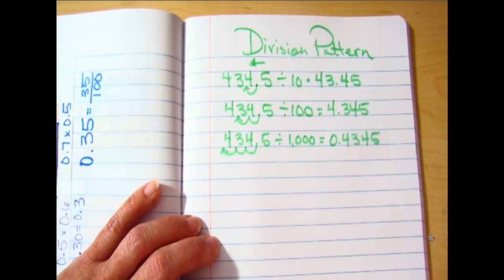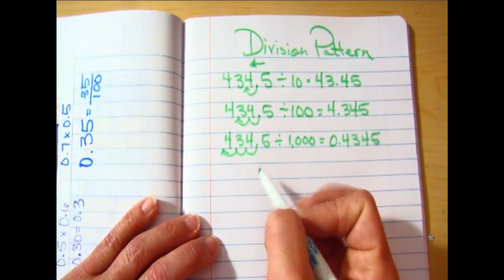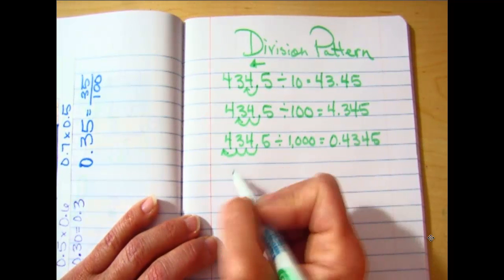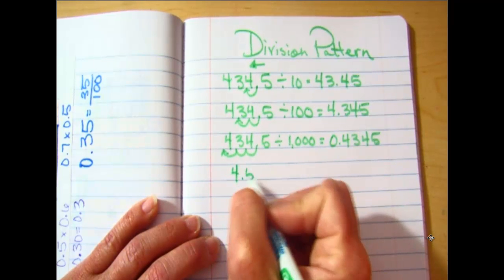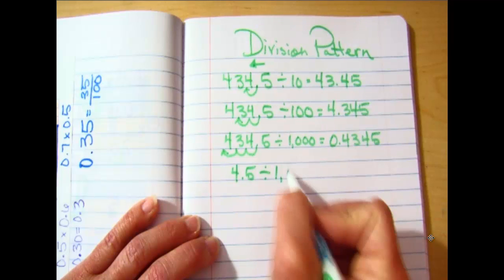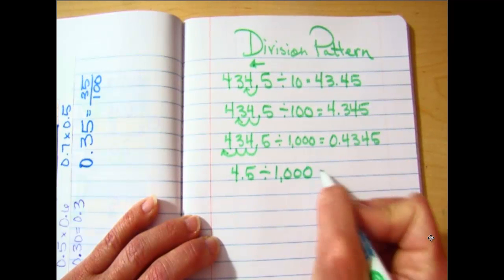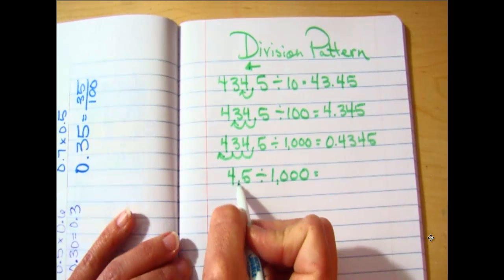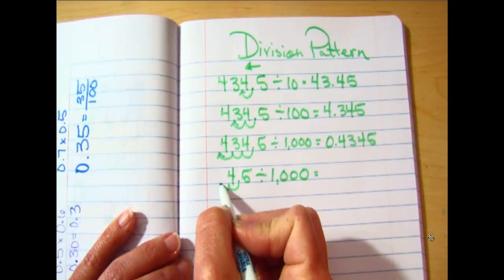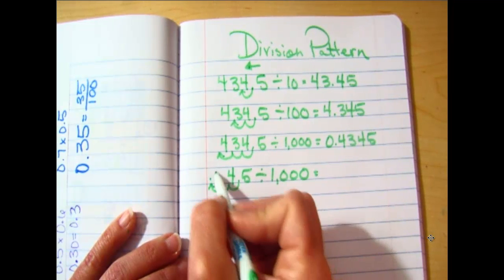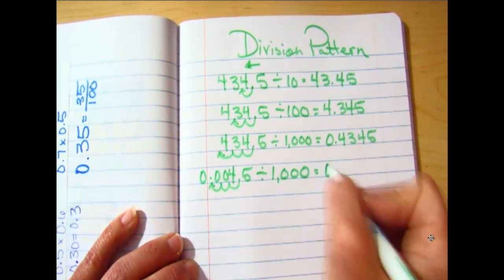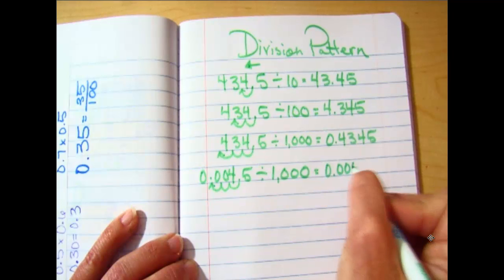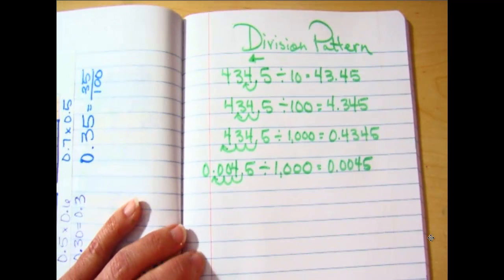She had a really good question. If I have, let's say, 4.5 divided by a thousand, she asked if I add zeros. So when I hop one, two, three, everywhere there's an empty spot gets a zero. You're absolutely right. You're just filling in zeros anywhere there's an empty spot.